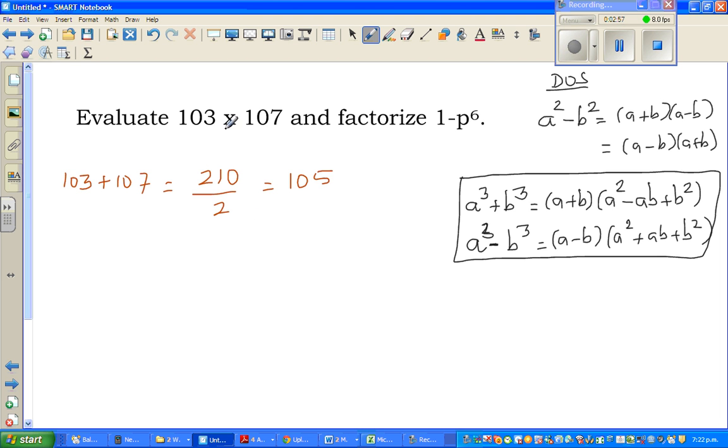Now you may not understand why I did this. What we are doing is finding the mean of these two numbers. The mean of these two numbers is 105. I can write 103 times 107 as 105 minus 2 times 105 plus 2. 103 is 105 take away 2, and 107 is 105 plus 2.